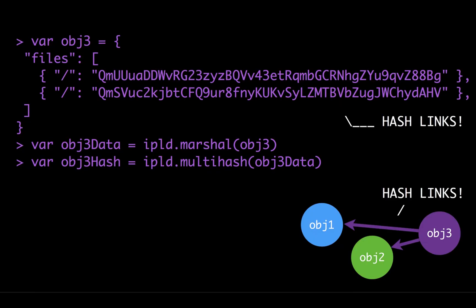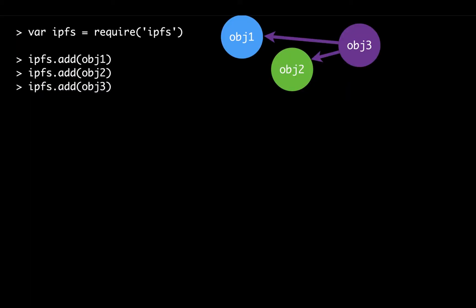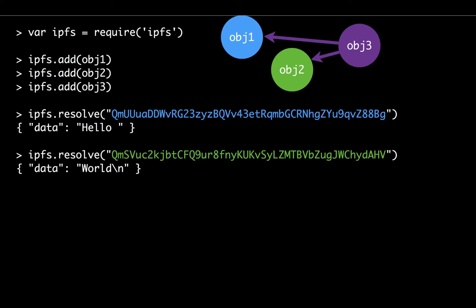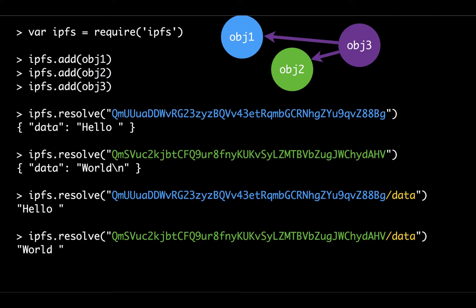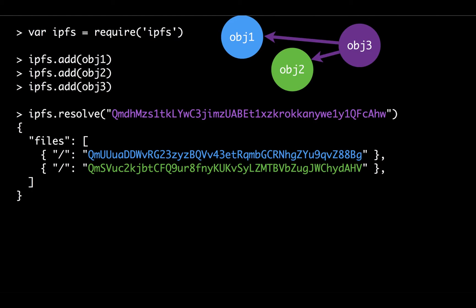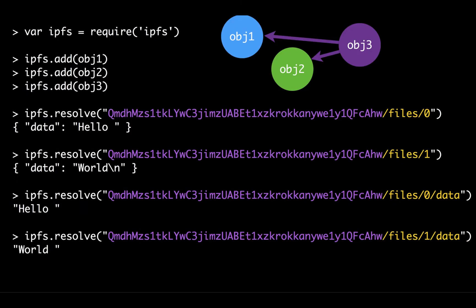Now we have this linked structure. If we require IPFS and add the three objects, we can try to resolve BG or HB — object one and object two — and it gives you back the data: 'hello' and 'world'. If you add a forward slash and 'data', you get back the direct raw items, similar to touching JSON but indexing directly by address. If you put in HW it gives you back the files — those two objects — and you can index them like an array with zero and one to get back the data: 'hello' and 'world' again.